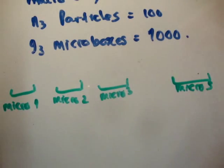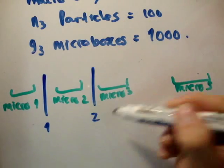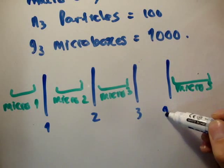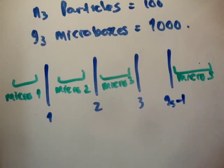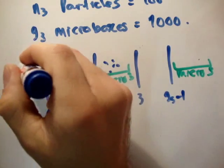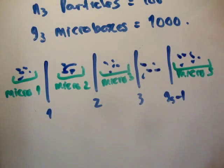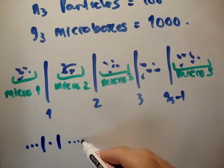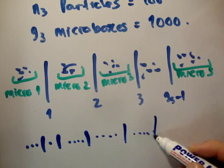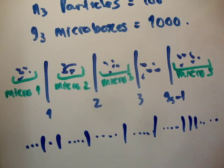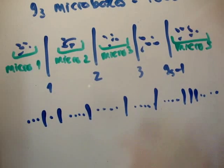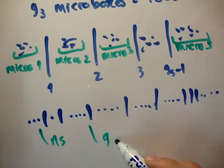So, there are some microboxes. This is partition 1, partition 2, partition 3, partition g sub s minus 1. Now, remember that there are n sub s particles. Some are dotted around in here as well. Whatever. But because of looking at the partitions, they are all in a line. So, it'll be 1, 2 dots, a line, a dot, a line, dot, dot, dot, a line. It looks like Morse code, I suppose, doesn't it? But these are all the particles lined up in all the microboxes.